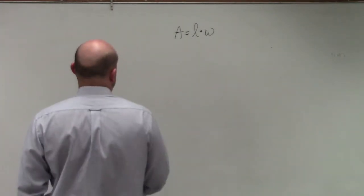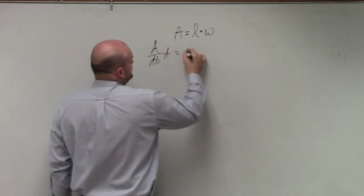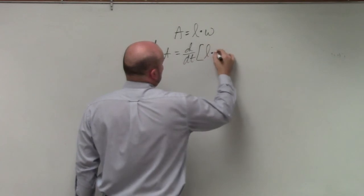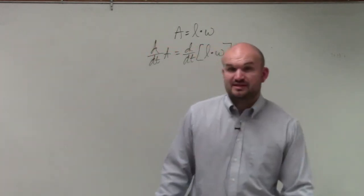So again, if we were going to do this with respect to time, we'd have d over dt of A equals d over dt of length times width. Again, this would be like the area of a rectangle.